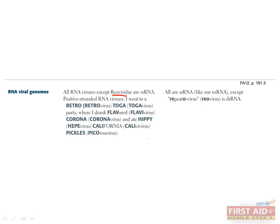After you become more familiar with the RNA viruses, this mnemonic will help you remember which ones are the positive-stranded RNA viruses. These include retrovirus, togavirus, flavivirus, coronavirus, hepevirus, calicivirus, and picornavirus. Use this mnemonic to help you: 'I went to a retro-toga party where I drank flavored corona and ate hippie California pickles.'